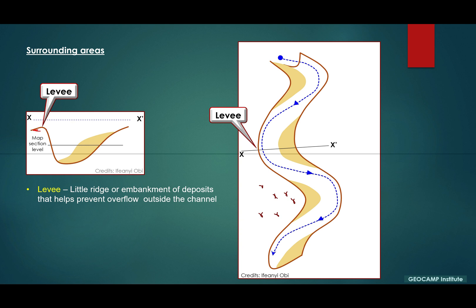So if I have this little mass of sediments kind of acting as a barrier, whatever I have within the system will be unable to flow out. So this levee is actually a natural ridge for everything within the channel field.